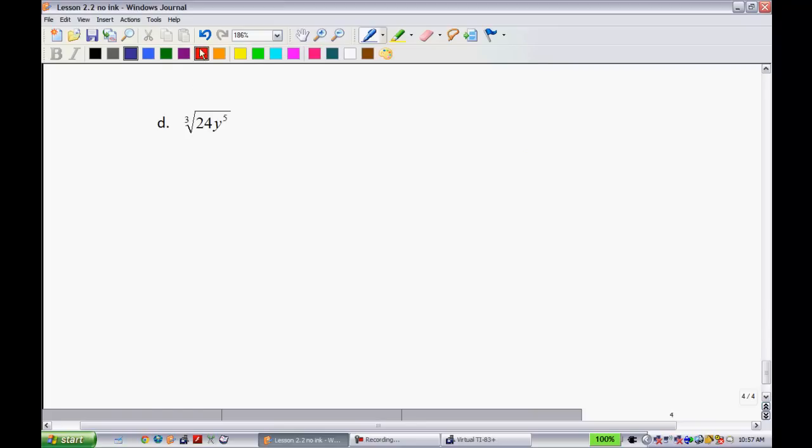We have the cube root of 24y to the 5. Since the index is odd, then what do we know about that? We know that whatever's in here can be either positive or negative.